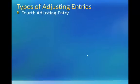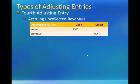The fourth and final adjusting entry accrues uncollected revenue. This entry results from revenue being earned before cash is received. The entry generally involves a debit to an asset account and a credit to a revenue account. Recording this type of adjusting entry helps to ensure that revenues recorded on the income statement are not understated, which would result in understated net income.